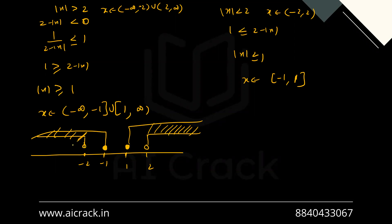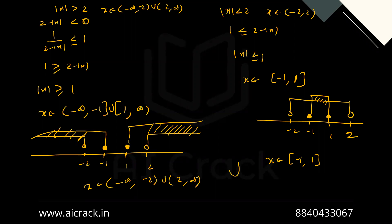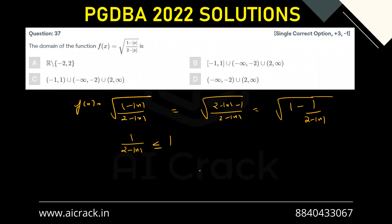We take the common points only. For Case 2, plotting the number line with −2, −1, 1, 2: the basic condition was (−2, 2) open brackets, and what we got was [−1, 1] closed brackets. Taking the common points gives x belongs to [−1, 1]. Taking the union of both cases, the correct answer is x belongs to (−∞, −2) ∪ [−1, 1] ∪ (2, ∞).